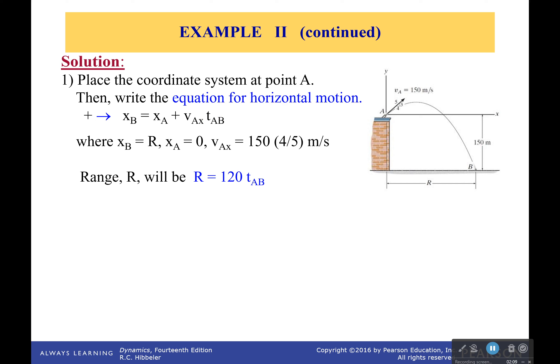So if we simplify as much as we can, all we can get is that this distance R is going to be equal to 120 (that's the x component of the velocity) times however much time it's in the air.